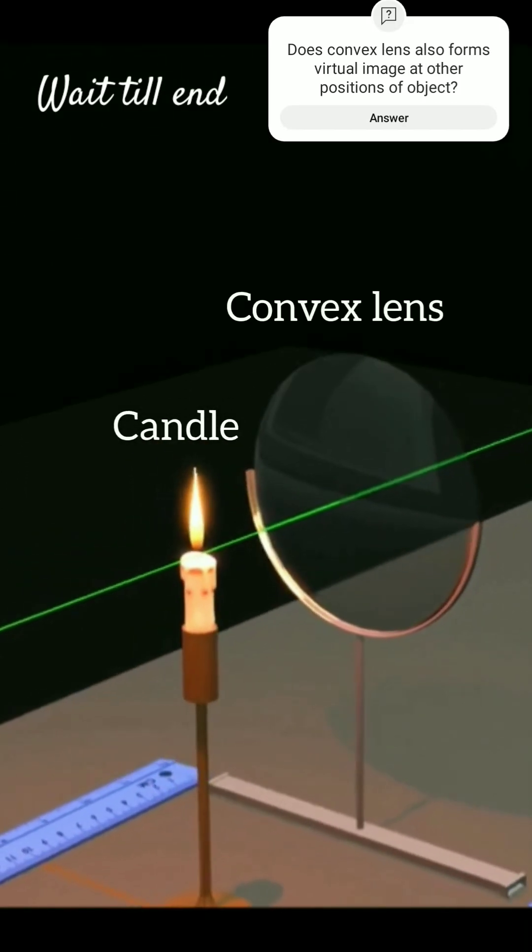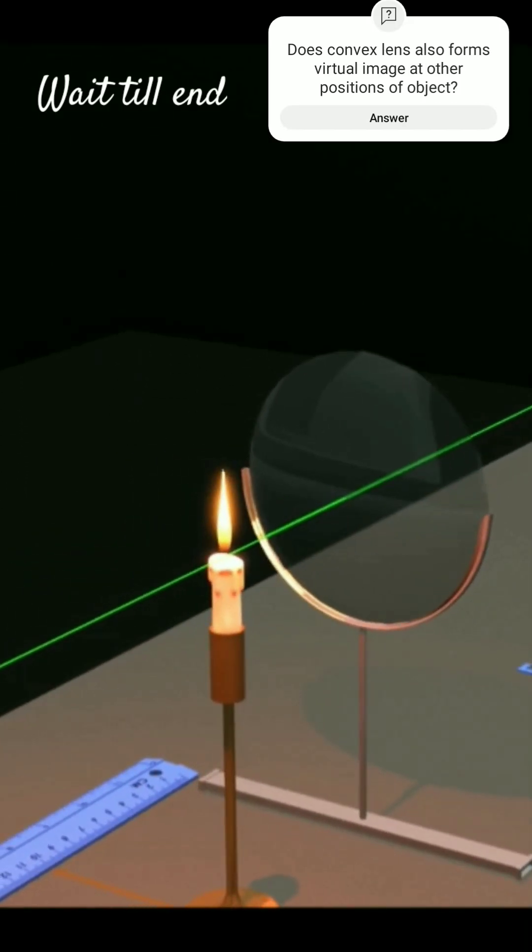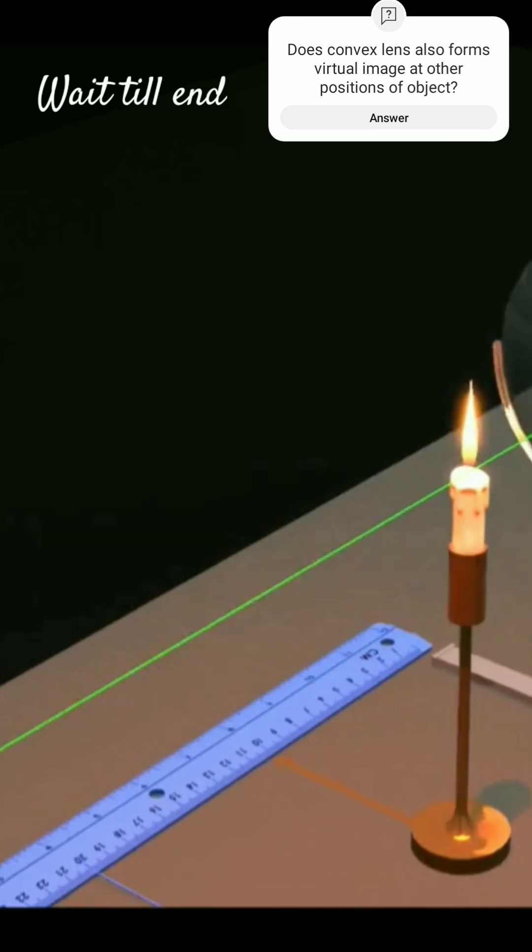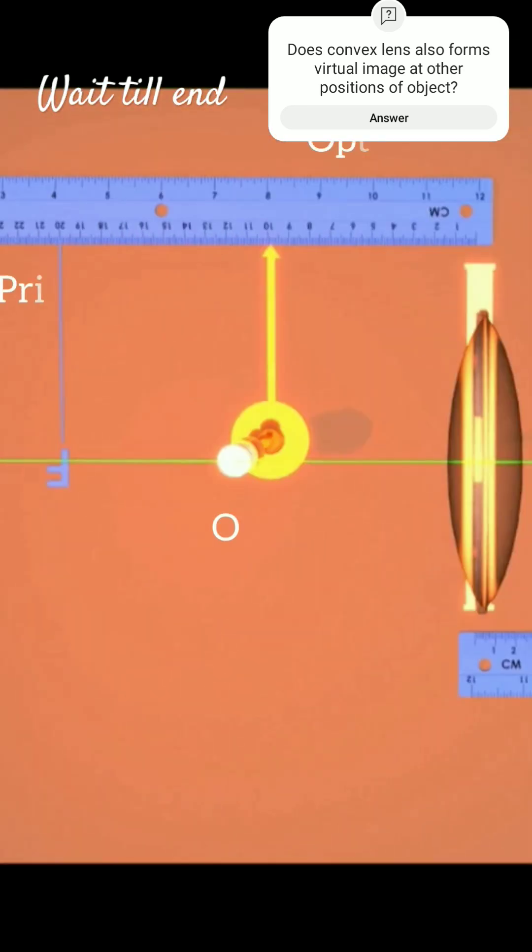In the following setup, we have convex lens and object as a candle. We will find the image of the object that is candle when it is placed between the optical center and principal focus of the convex lens.